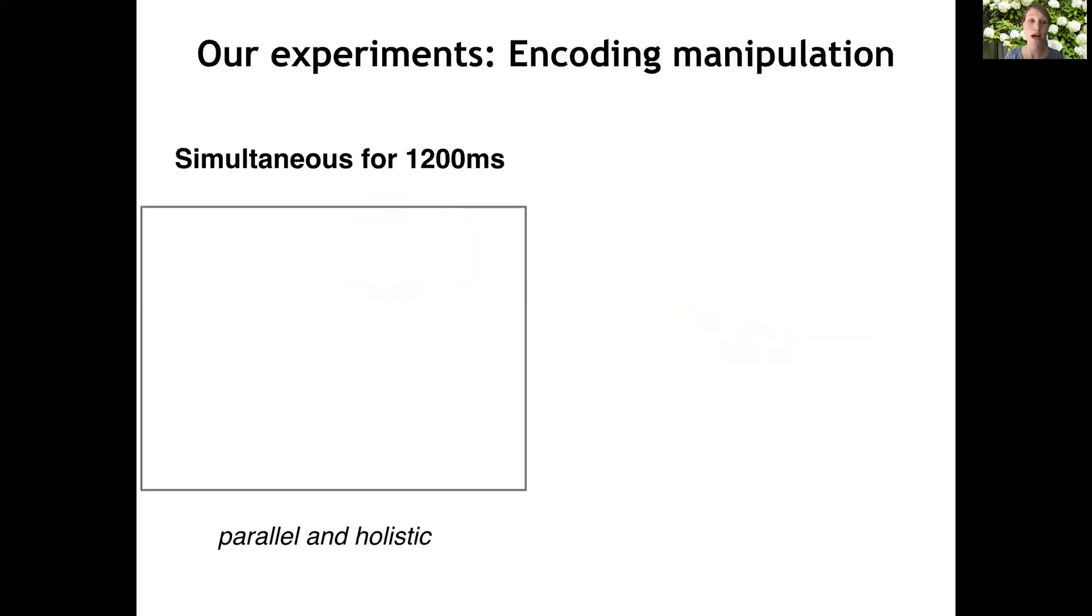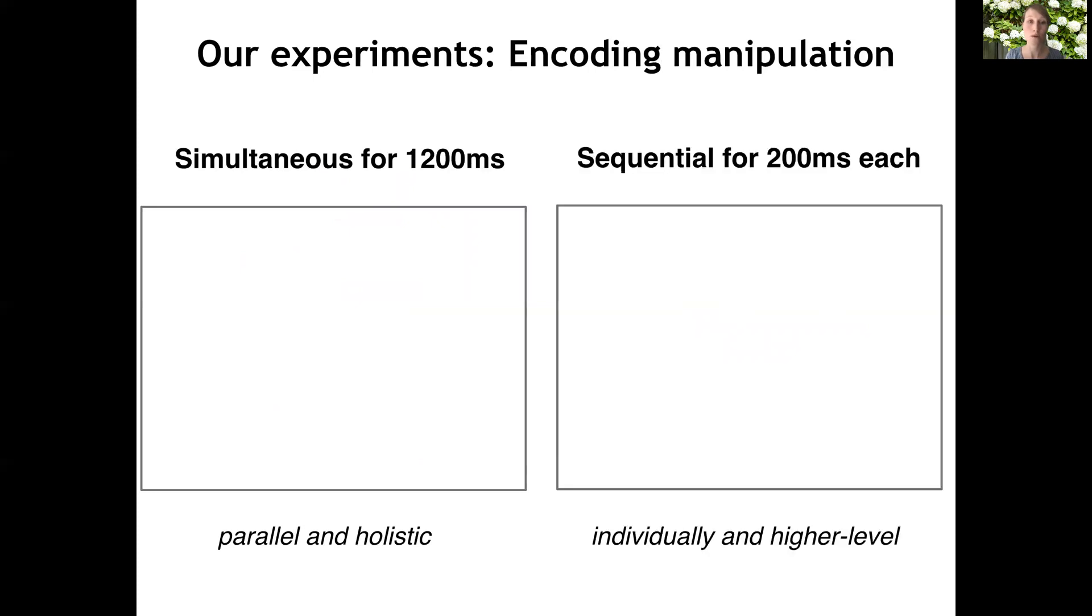To directly manipulate how the items are initially encoded, we either show these items all at once, promoting a parallel and holistic encoding strategy, or we show these items sequentially, which should push participants to focus on each item individually and thus process them in a deeper and more meaningful way.